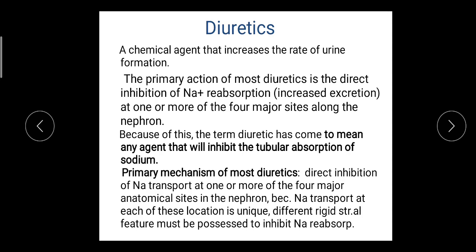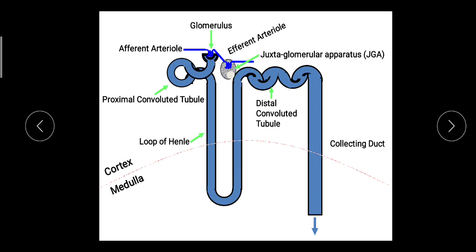The main mechanism of action of diuretics is inhibition of sodium reabsorption. Sodium reabsorption occurs at four major sites in the nephron, and the mechanism of transport at each location is unique. Because the mechanisms differ, inhibition requires different structural features, so all classes of diuretics do not have the same structure — they have different structural features to inhibit sodium reabsorption.